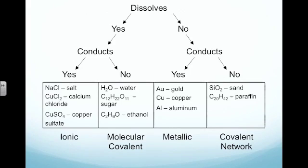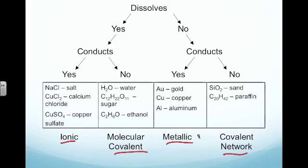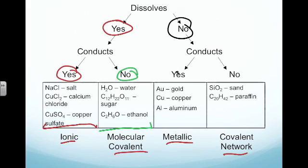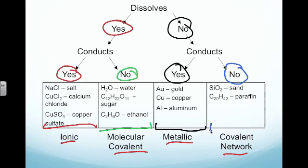We've seen this flowchart before — this is part of our You Light Up My Life activity. This is just a different way to organize it. We put everything through certain tests: we saw if they dissolved, and then if either the solid or the dissolved liquid conducted electricity. The categories we put them in actually refer to these four types of bonds. Things that dissolved and conducted electricity when dissolved are ionic bonds; things that dissolved but didn't conduct electricity were molecular covalent; things that didn't dissolve at all and still conducted electricity were metallic bonds; and things that didn't dissolve and also didn't conduct were covalent network bonds.